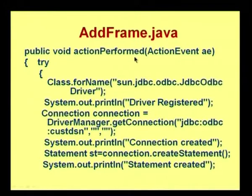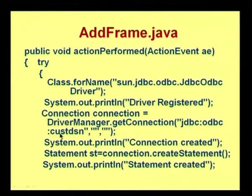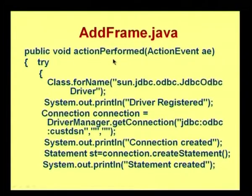In the actionPerformed method for the save button, I am creating a JDBC connectivity using the JDBC-ODBC driver — this is a Type 1 driver. The driver is registered and then I get the connection from the driver using customer DSN, which is the ODBC data source created on the client system with no username and password. I call getConnection to get the connection object and then create a statement to execute my insert statement. We will have a short break and then proceed further.